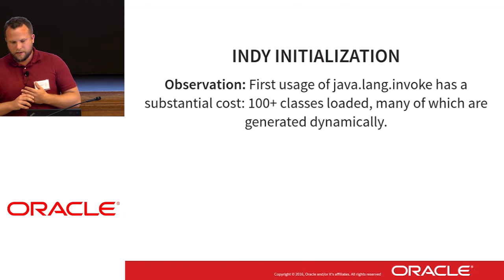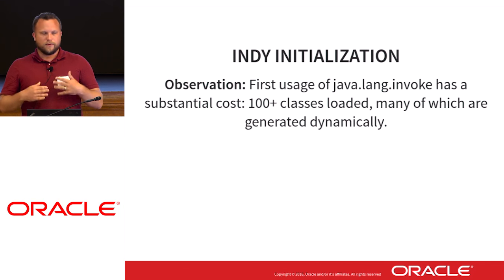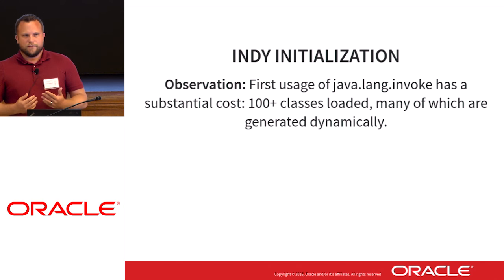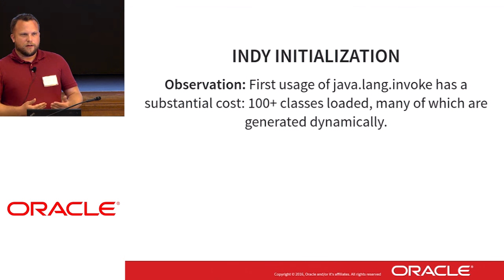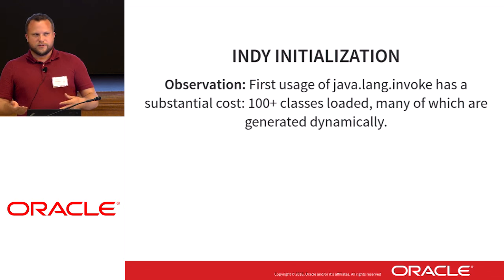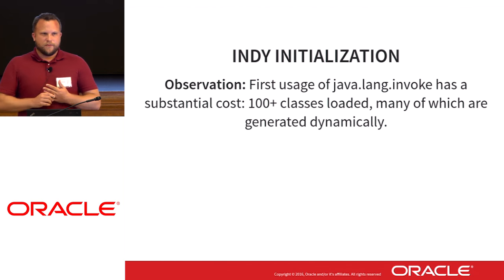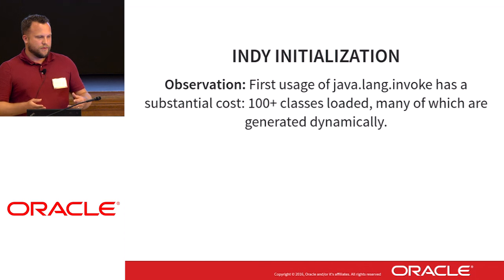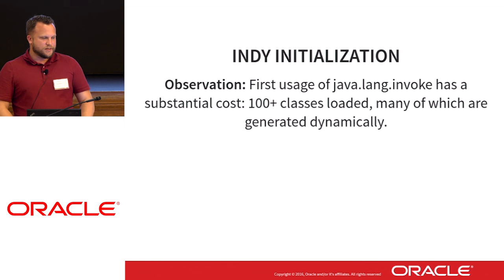The second thing — which, previous to working on Jigsaw, is why I started looking at trying to reduce the initialization costs of java.lang.invoke — is that the first usage of any lambda or method handle initializes the lambda meta factory and lots of infrastructure to support invoke dynamic. This was reported some years ago to be on the order of 80 milliseconds on some machines, with hundreds of classes being loaded and generated dynamically.